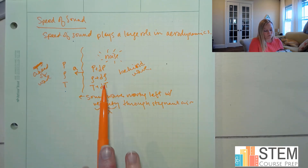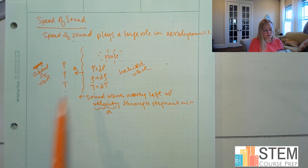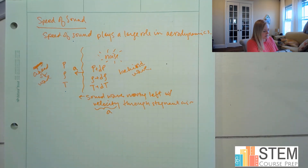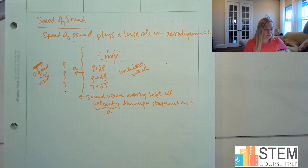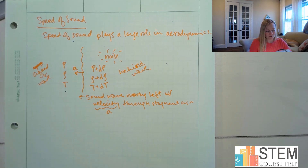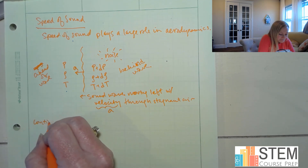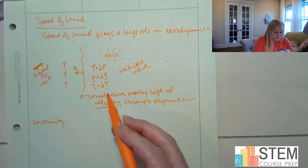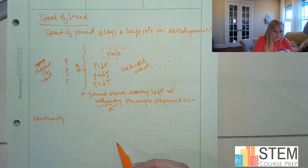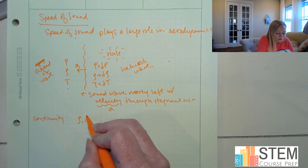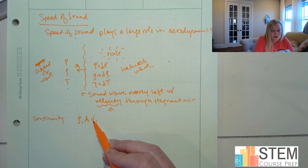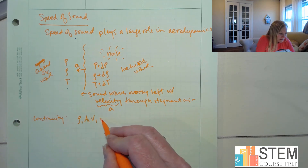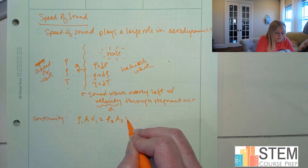The velocity is going to be A — that's our variable for speed of sound. Now once this sound wave comes through, we're going to have changes in these parameters. Behind the wave, after the wave passes, we're going to have pressure plus a change in pressure, density plus a change in density, and temperature plus a change in temperature.